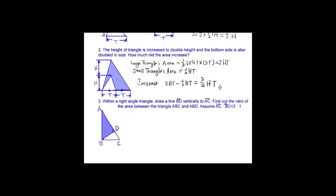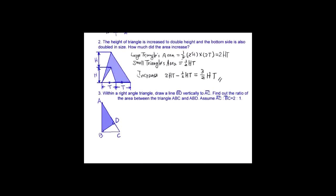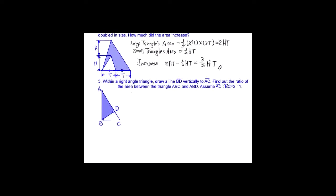Within the right angle triangle, draw a line BD vertically to AC. Find out the ratio of the area between triangle ABC and ABD. Assume AC equals 2 to 1.